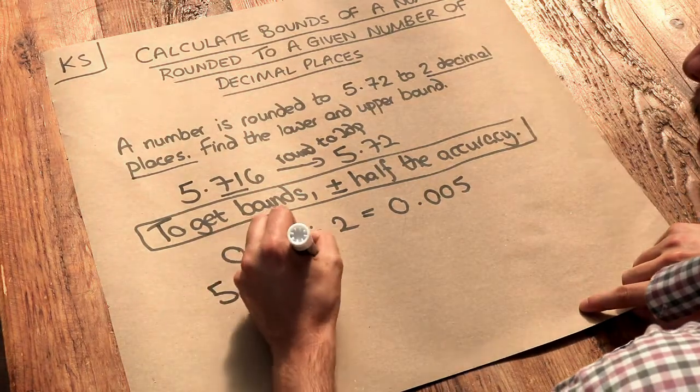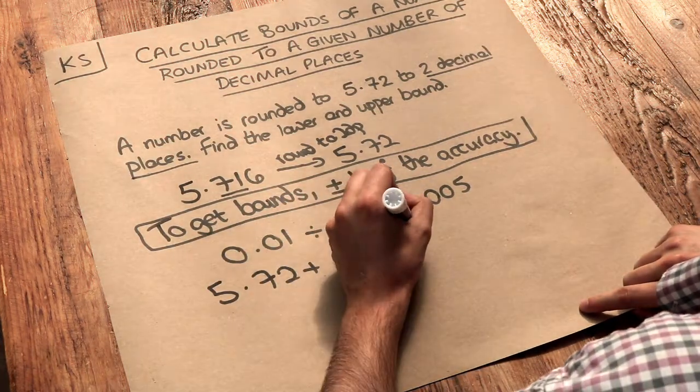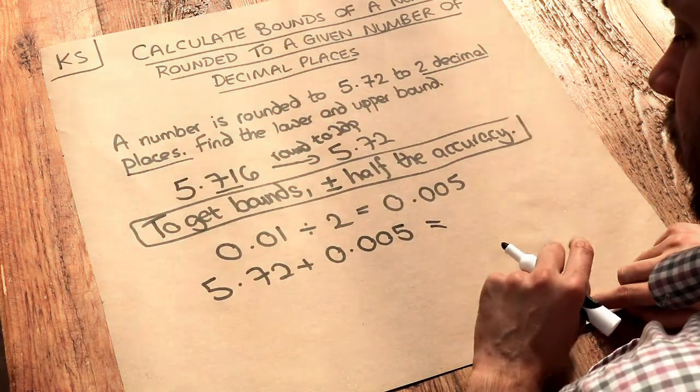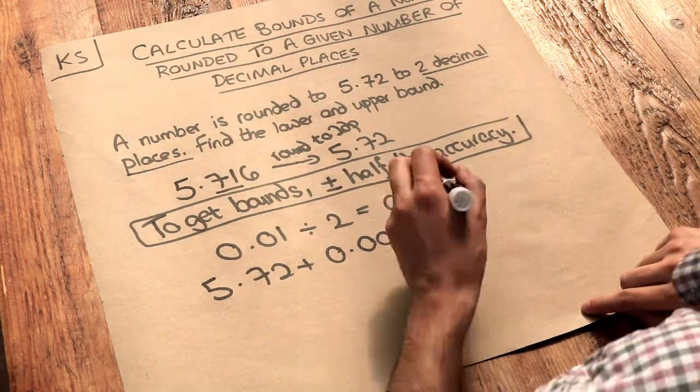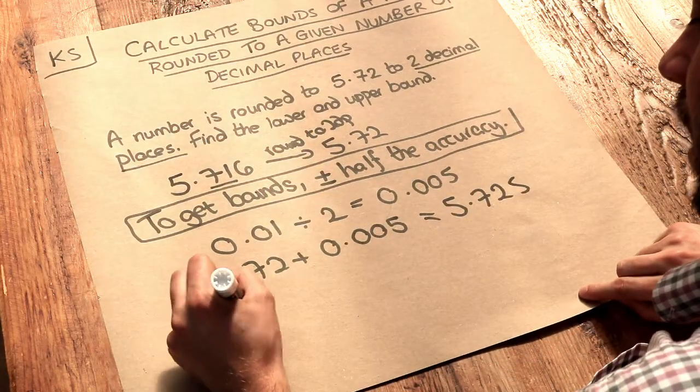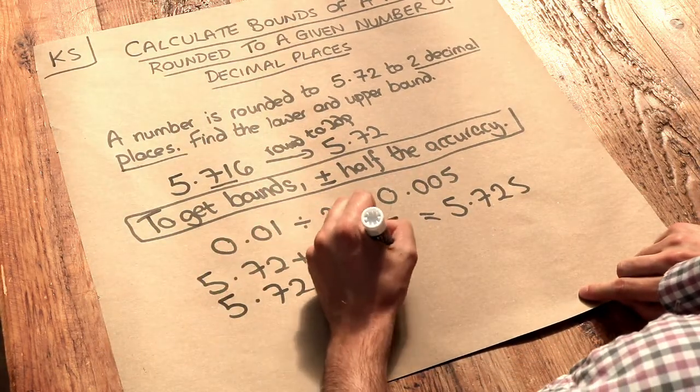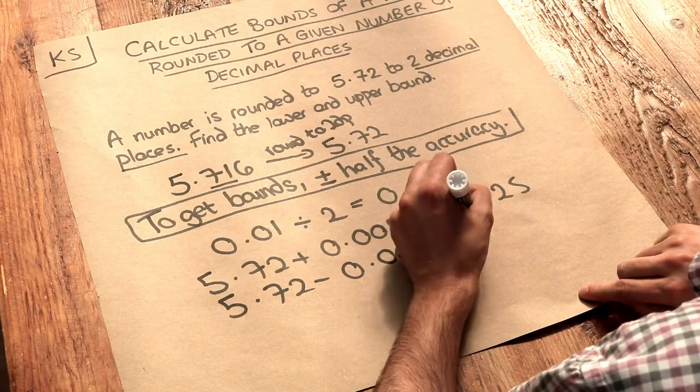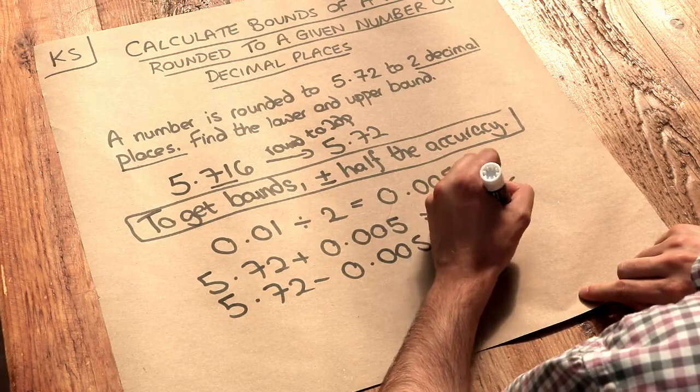5.72 plus 0.005 we can see that's going to be 5.725 and when we subtract half the accuracy that's going to be 5.715.